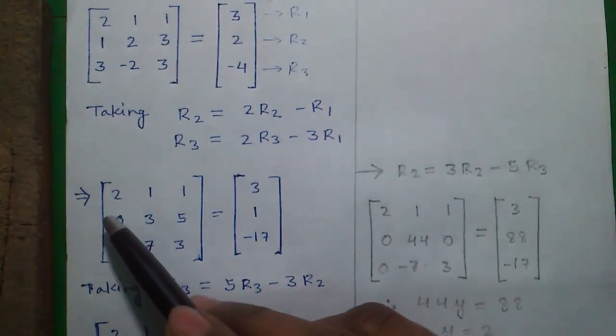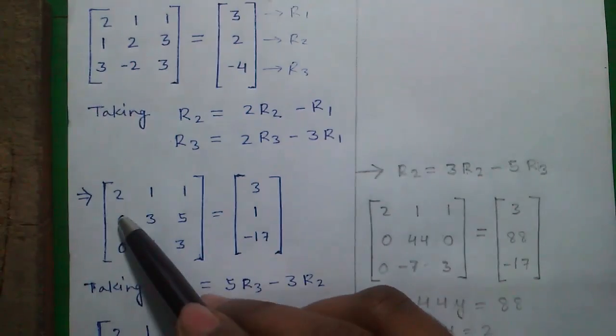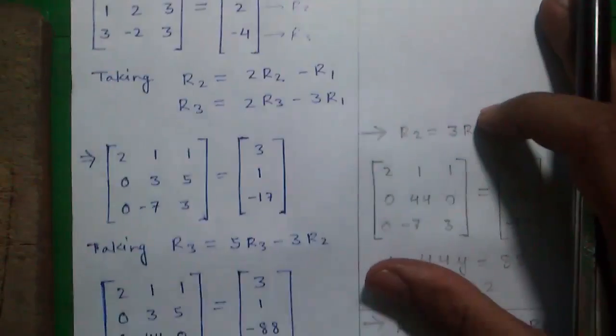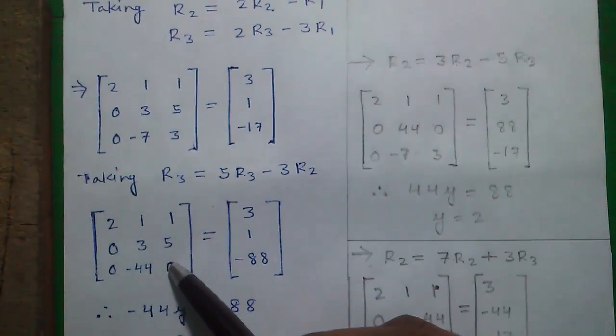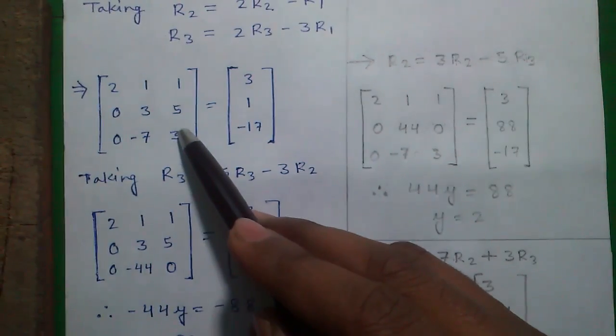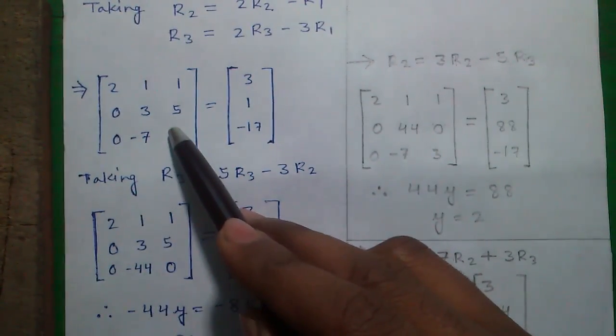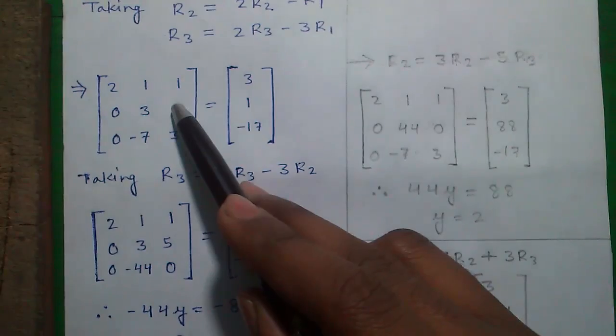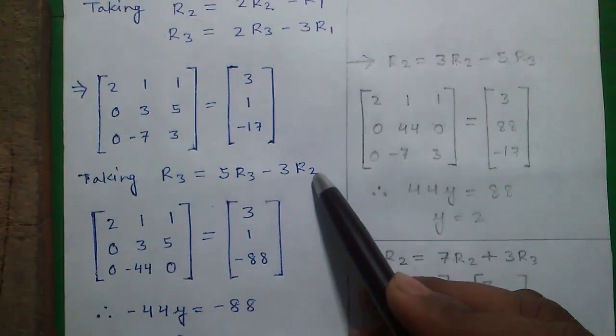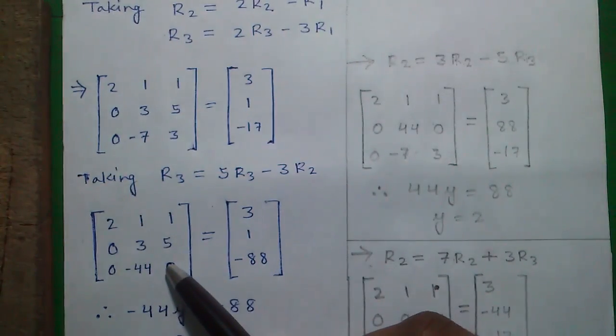And now we will bring two zeros in either Row 2 or Row 3. So we will bring two zeros in Row 3. So we will bring one zero at this position. So for that we can multiply R3 by 5 and subtract 3 times of R2 from that. So R3 equals to 5R3 minus 3R2. So we will get zero at this position.